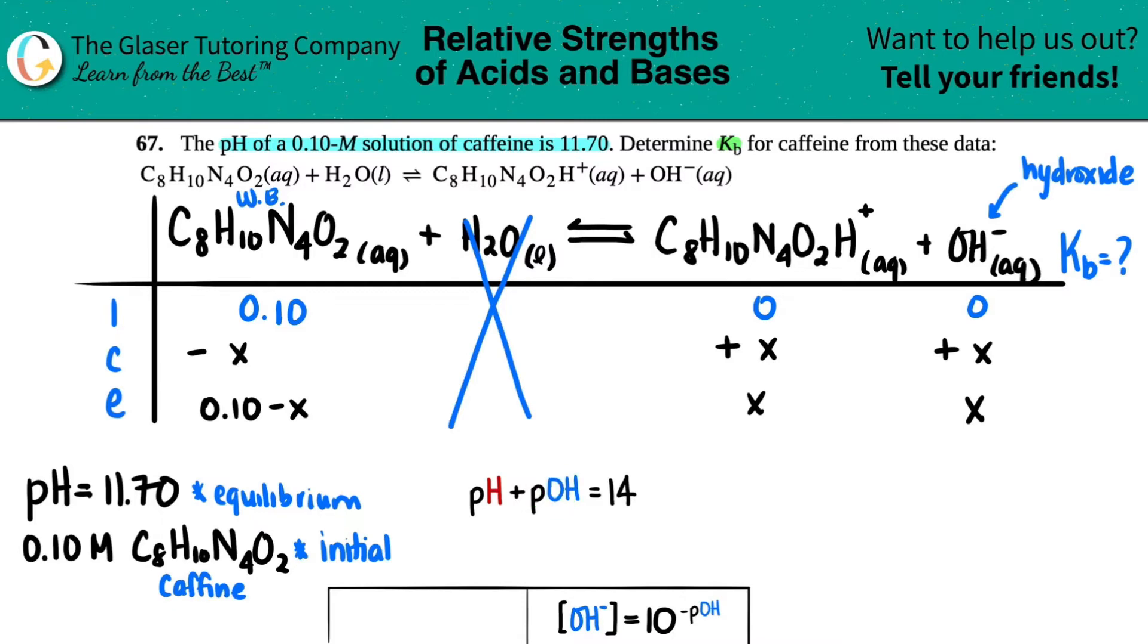And now my equation turns into pOH equals 14 minus the pH. So pOH equals 14 minus 11.70. So let's just see what that pOH is going to be. 14 minus 11.7. I get 2.30.